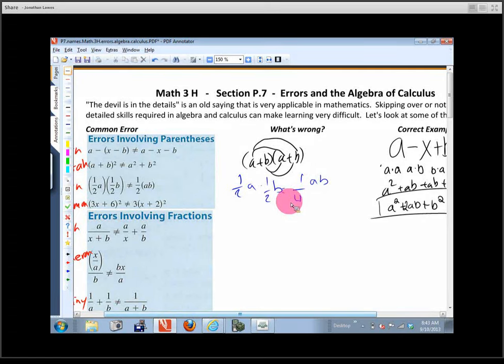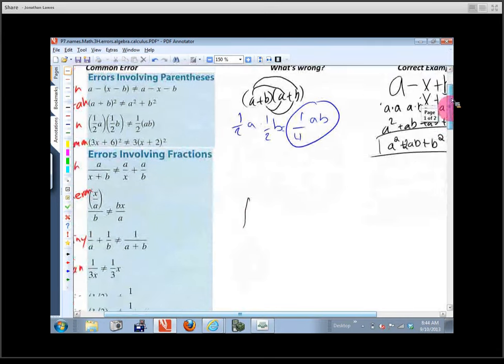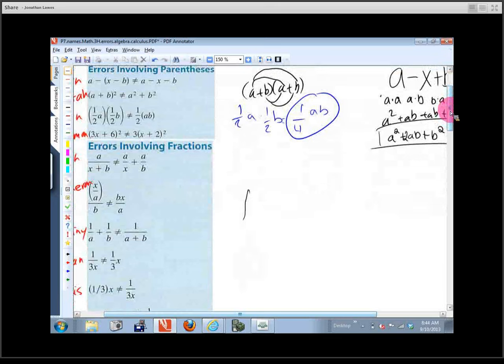Okay. They multiplied the a and the b together, but they just said, hey, this is a one-half and that's a one-half. So we'll just leave that. One-half times one-half is one-fourth a b. Okay. Raymond, you're up next. What happened here? So Raymond believes it was because what?